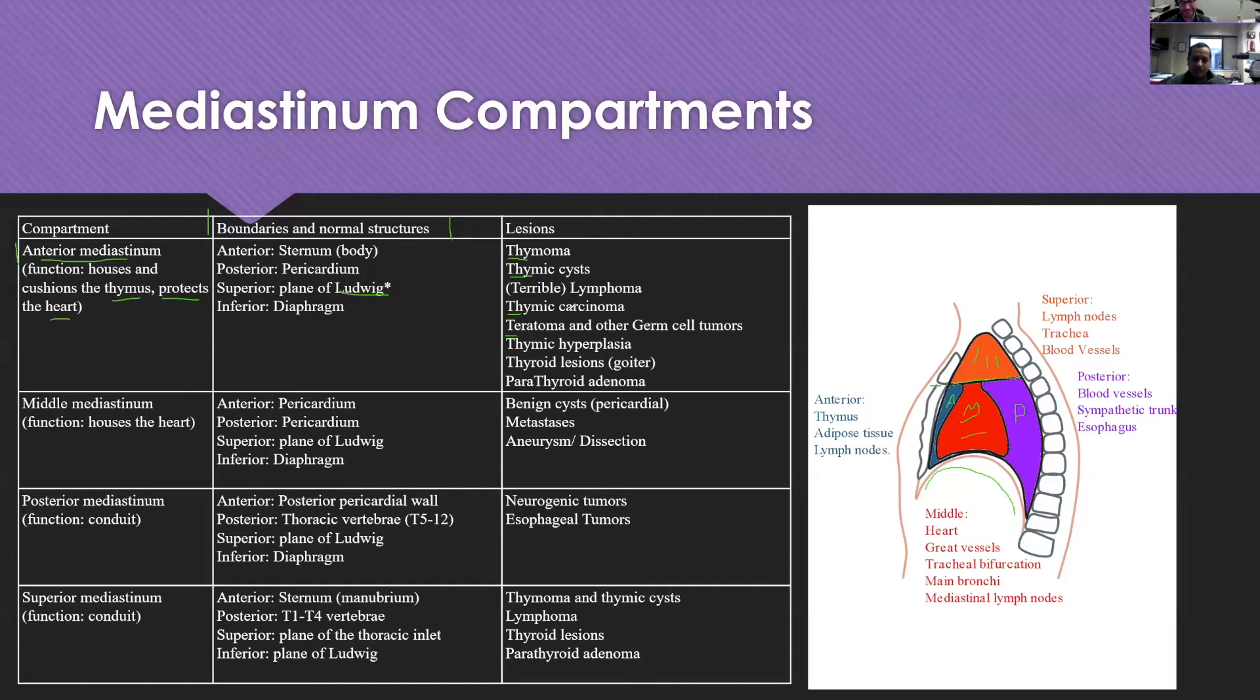Remember as well that you can also just have thymic hyperplasia, so it doesn't actually have to be a neoplasm. Then thyroid, so you can actually have goiters that can extend all the way down into the mediastinum as well to give you a mediastinal lesion. Another pseudo-T is a parathyroid adenoma. Remember that you can get parathyroid tissue all over the place including in the mediastinum.